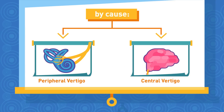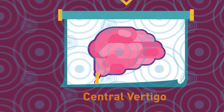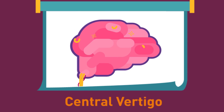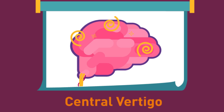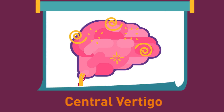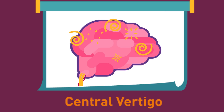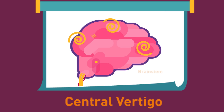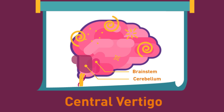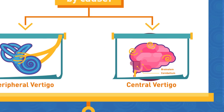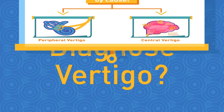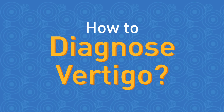Central Vertigo: Central vertigo refers to dizziness or vertigo that results from a problem in the brain. The area of the brain usually affected is the brain stem or cerebellum.